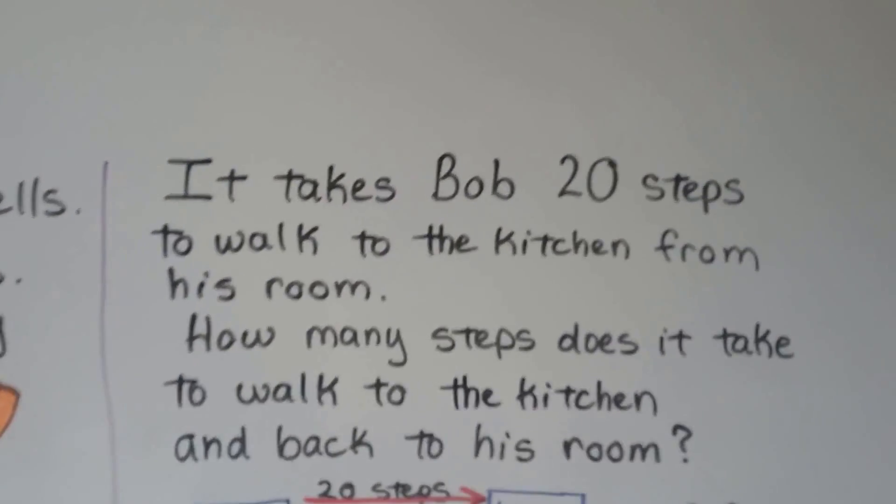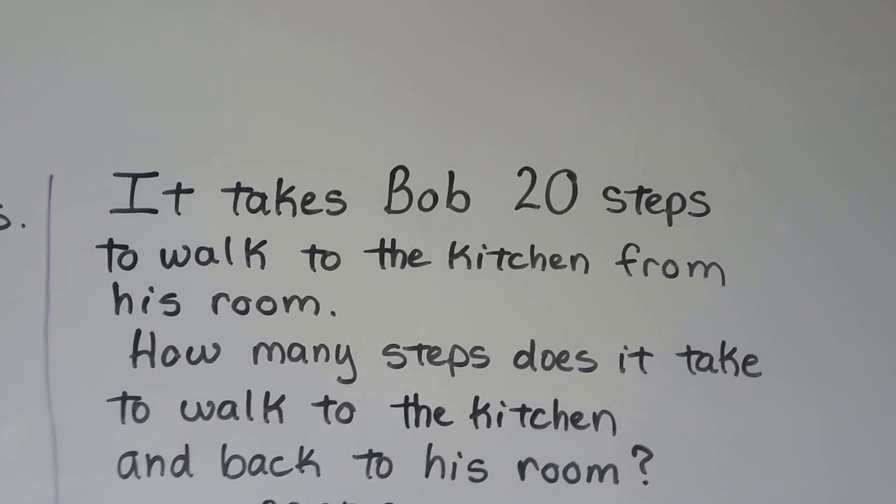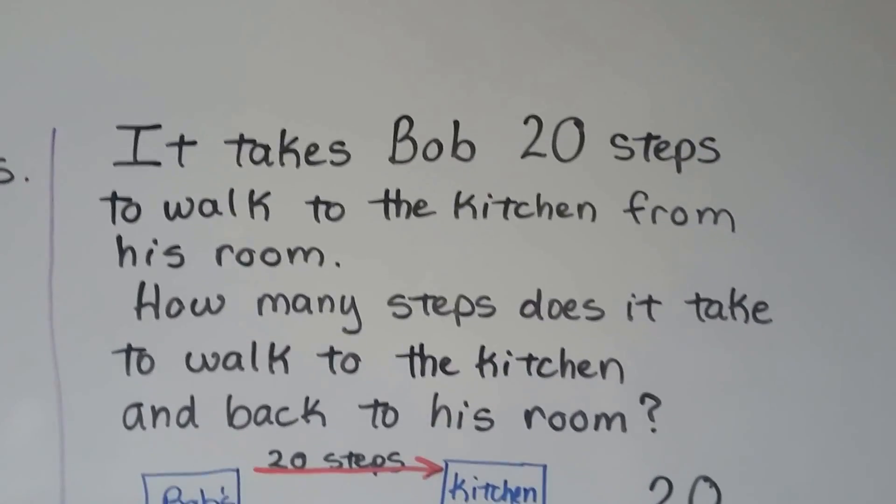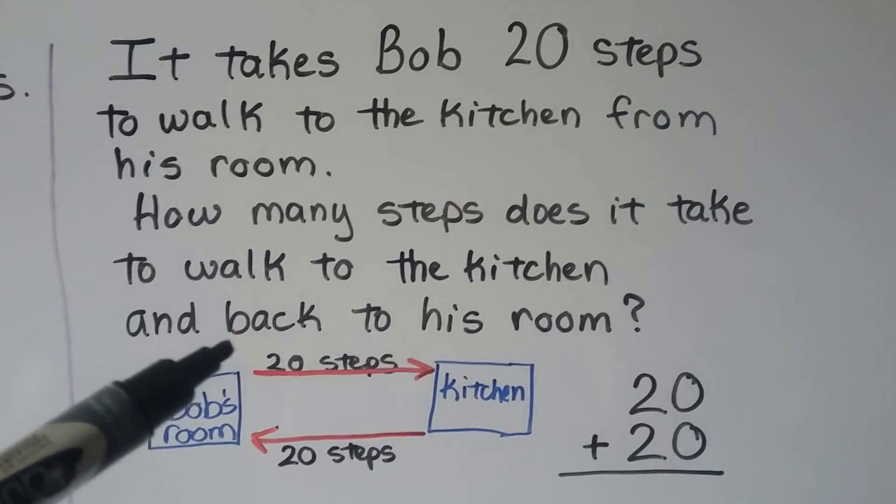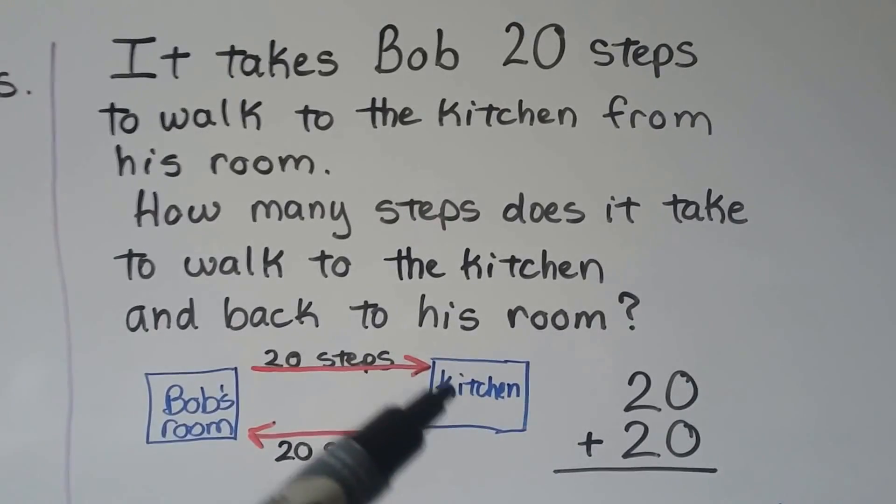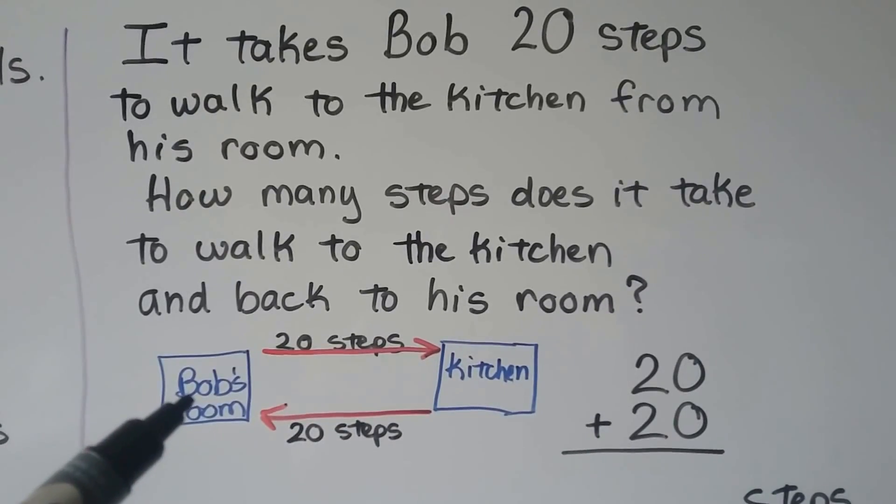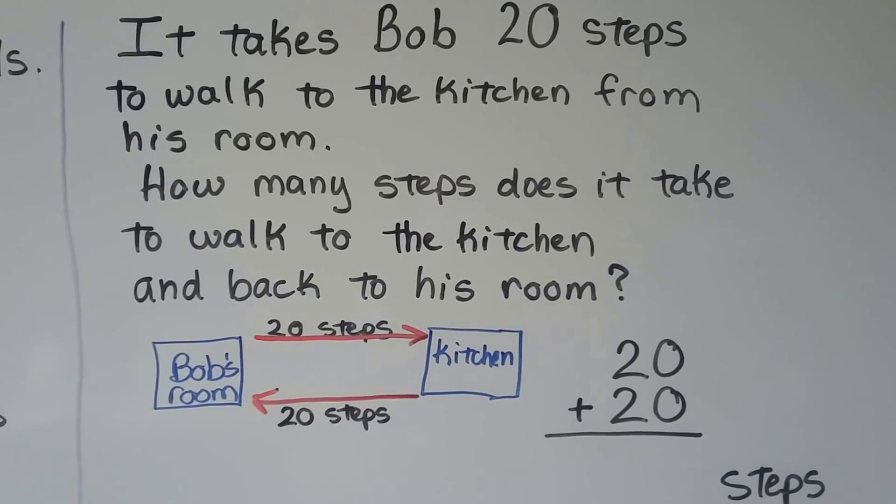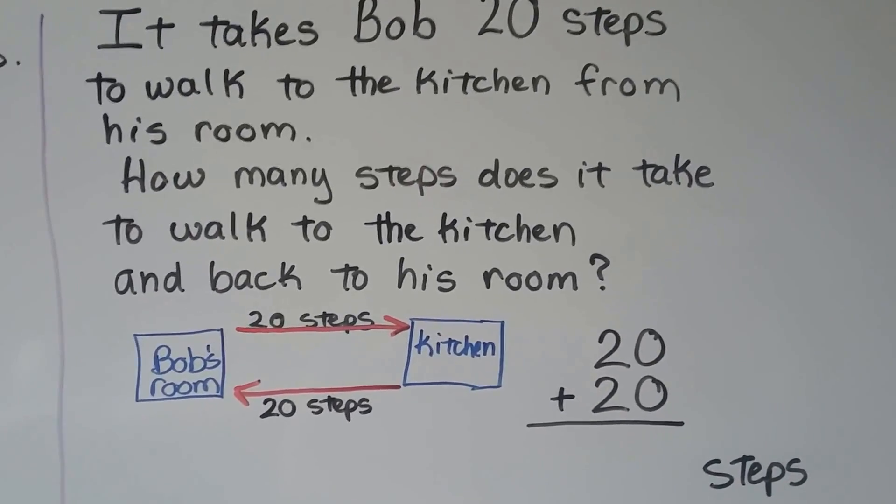It takes Bob twenty steps to walk to the kitchen from his room. How many steps does it take to walk to the kitchen and back to his room? We can draw a picture. We can draw Bob's room and we can draw the kitchen and we can draw that it takes twenty steps to get to the kitchen. It's asking us how many steps it would take to walk to the kitchen and back to his room. That tells us we need to add twenty steps and twenty steps. It's the same distance to the kitchen as it is back to his room.